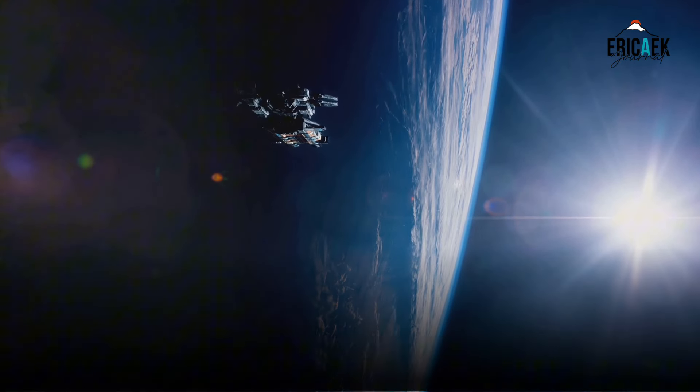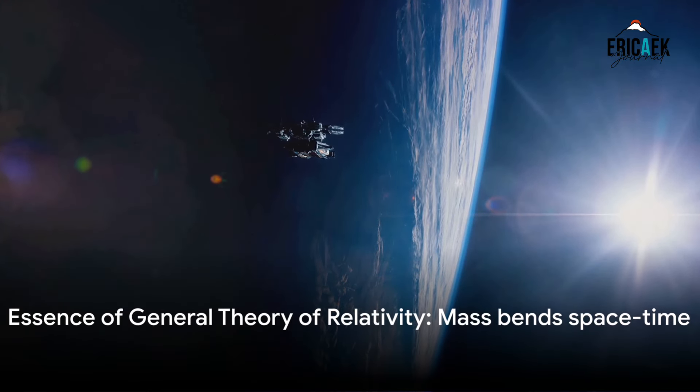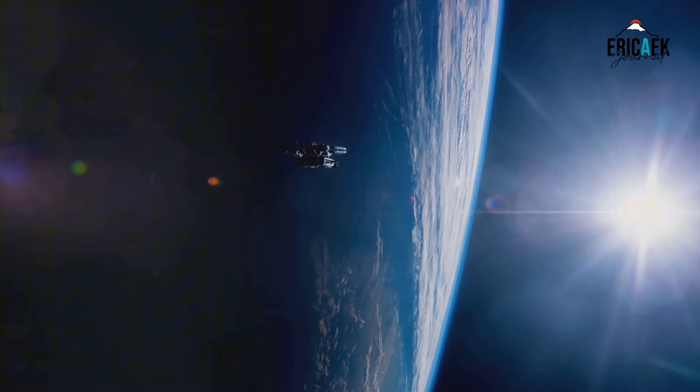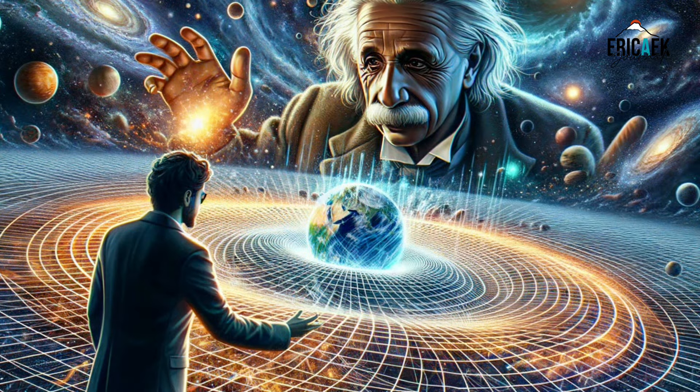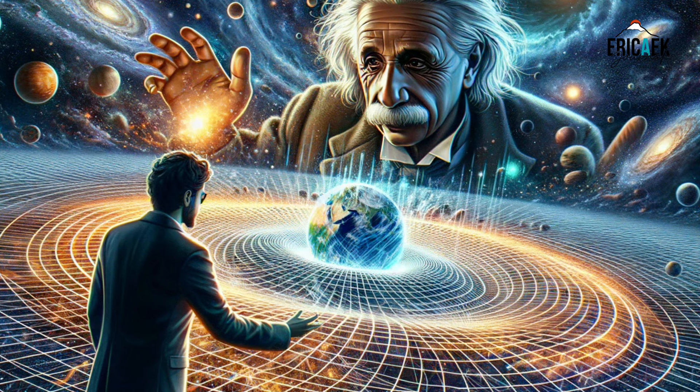To put it simply, mass tells space-time how to curve, and that curve tells objects how to move. This is the essence of Einstein's general theory of relativity, a revolutionary idea that reshaped our understanding of the universe and the forces at play within it.